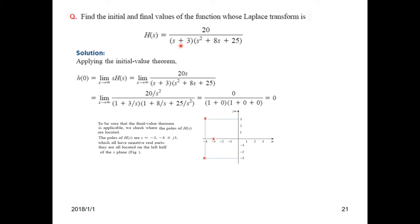Here, s+3 equals 0 means s equals -3, so this is one pole. If you solve the quadratic equation, you can find the other two poles: -4+j3 and -4-j3. All three poles are on the left hand side.